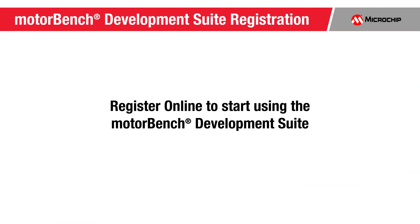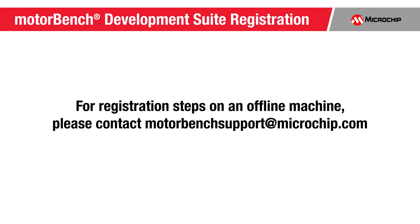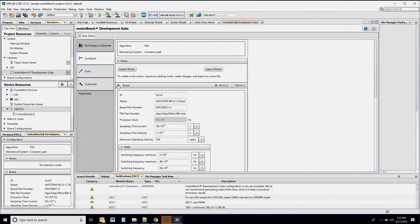At this point, the MotorBench window will request you to complete the registration when used for the first time. For registration on an offline machine, please contact MotorBench support at microchip.com. Once you complete the registration, you will get to the home page. You will navigate between the Configure, Tune, and Customize stages as you progress.